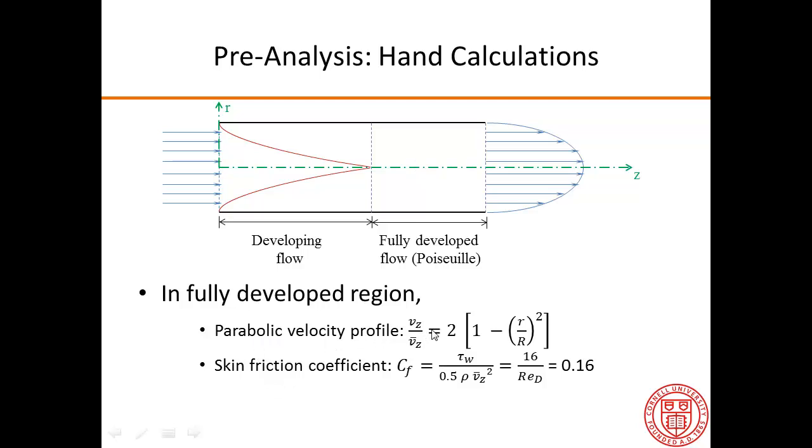We can predict what the velocity profile is. It's a classic parabolic velocity profile that you can find in any intro to fluids textbook. If we write that as the ratio of the axial velocity to the average velocity at any cross-section, we get that relation. If you write it in this form, you don't get any dependence on the pressure gradient.